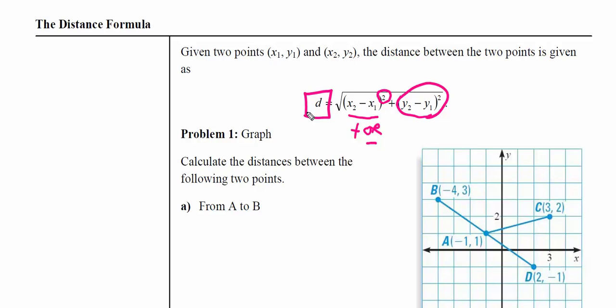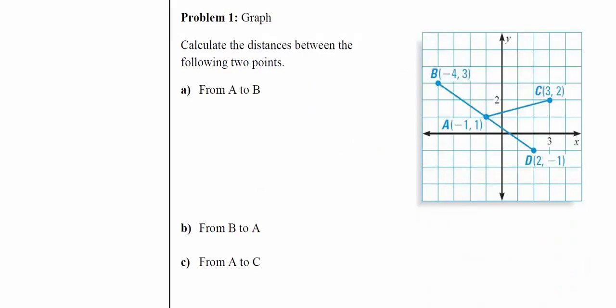For part A, we're going from A to B. We'll make this point number one and this one point number two. This is x1, this is y1, this is x2, this is y2. Take a moment to identify things. The formula will be the same regardless.